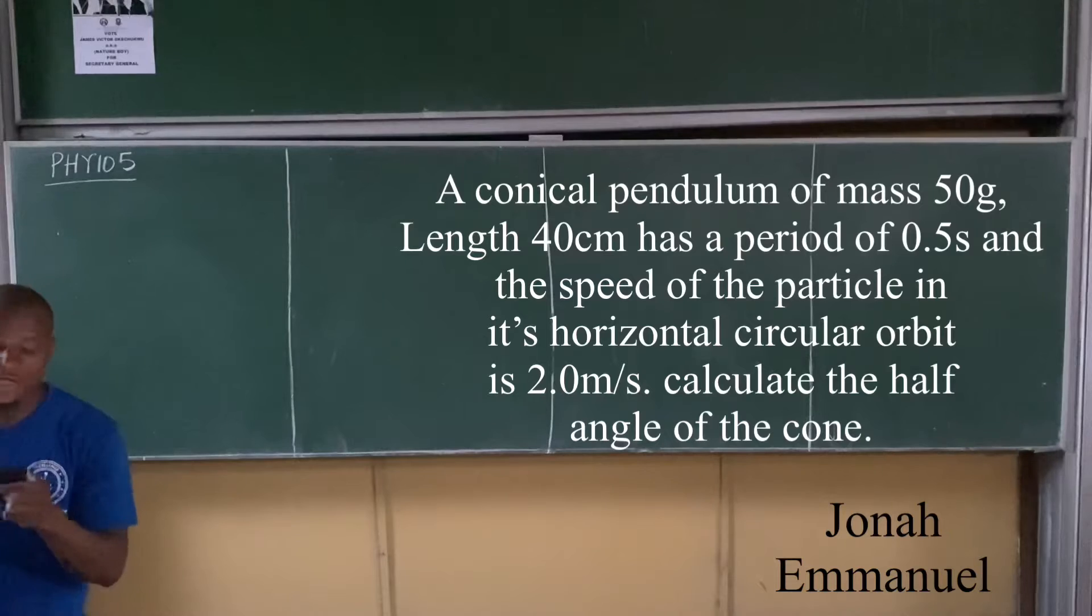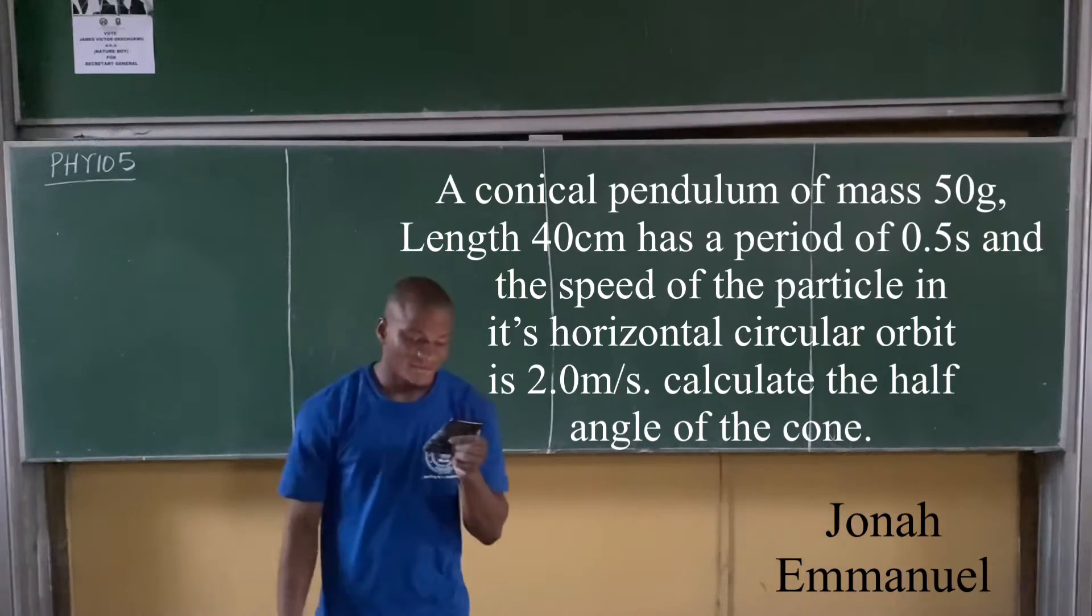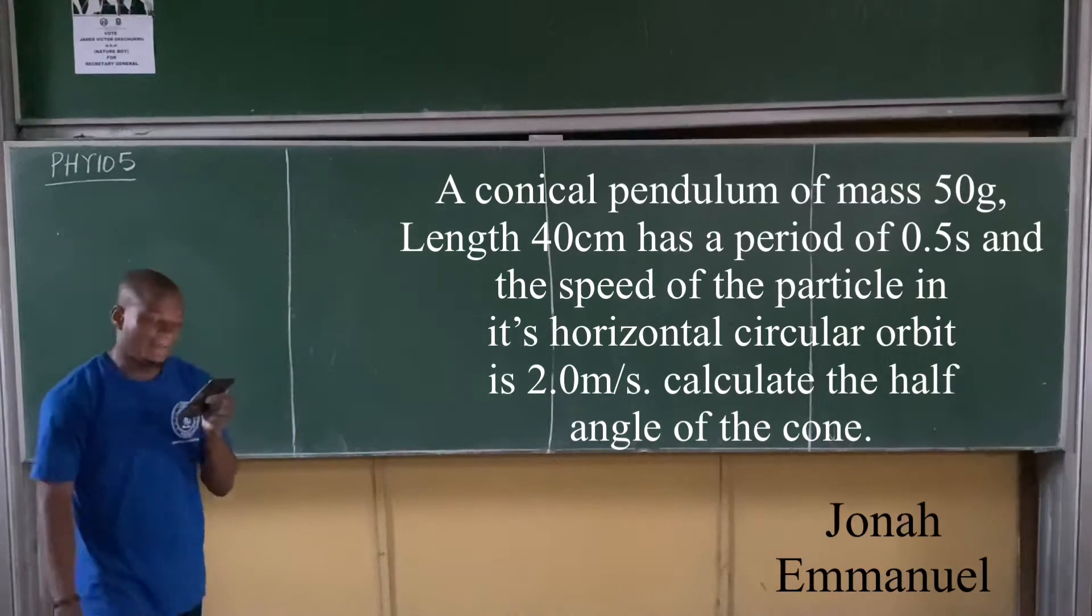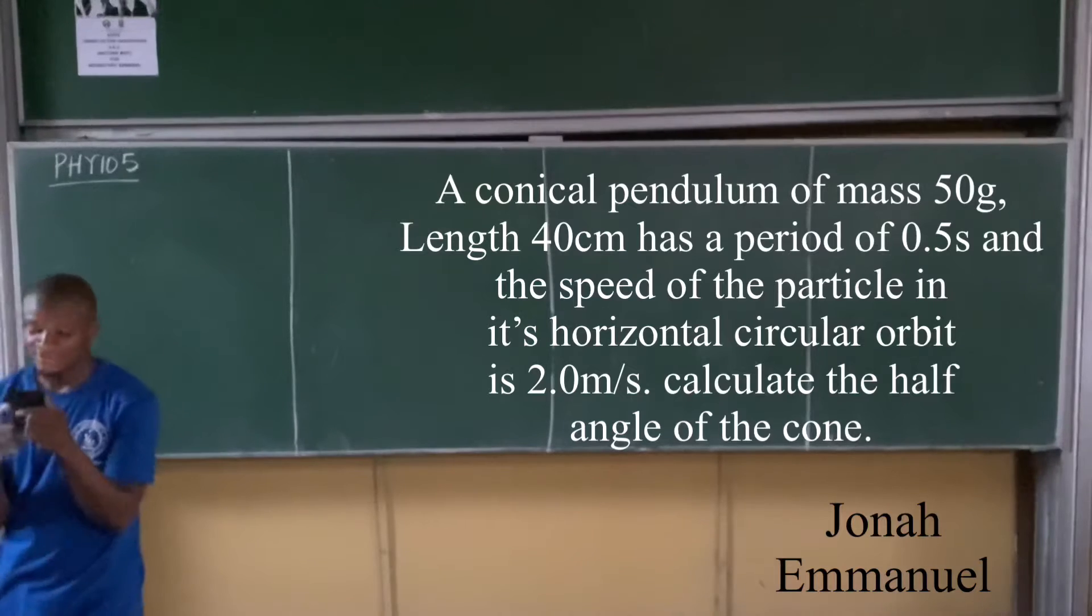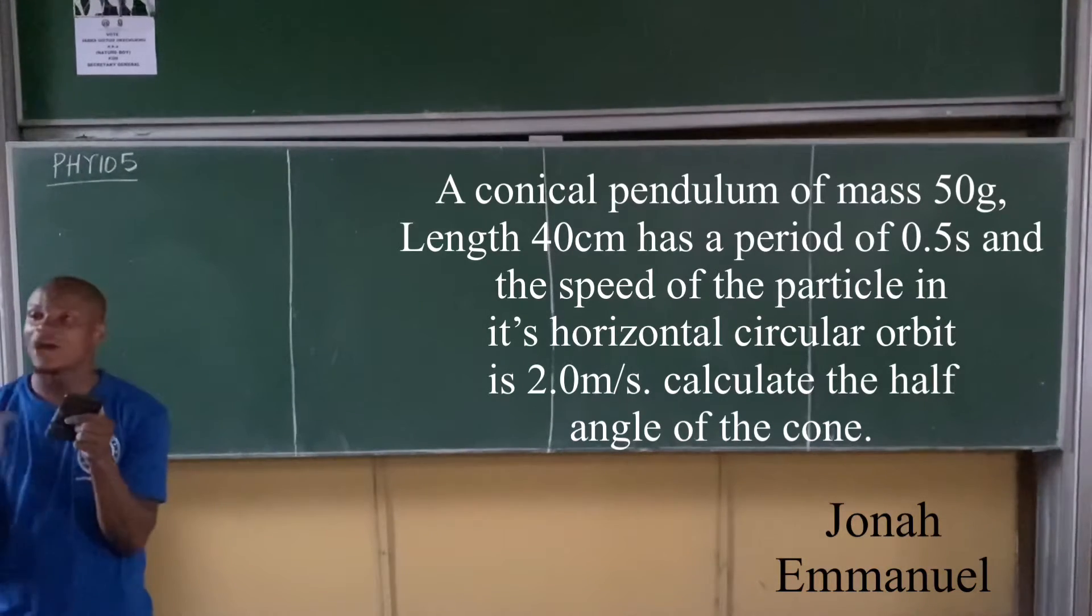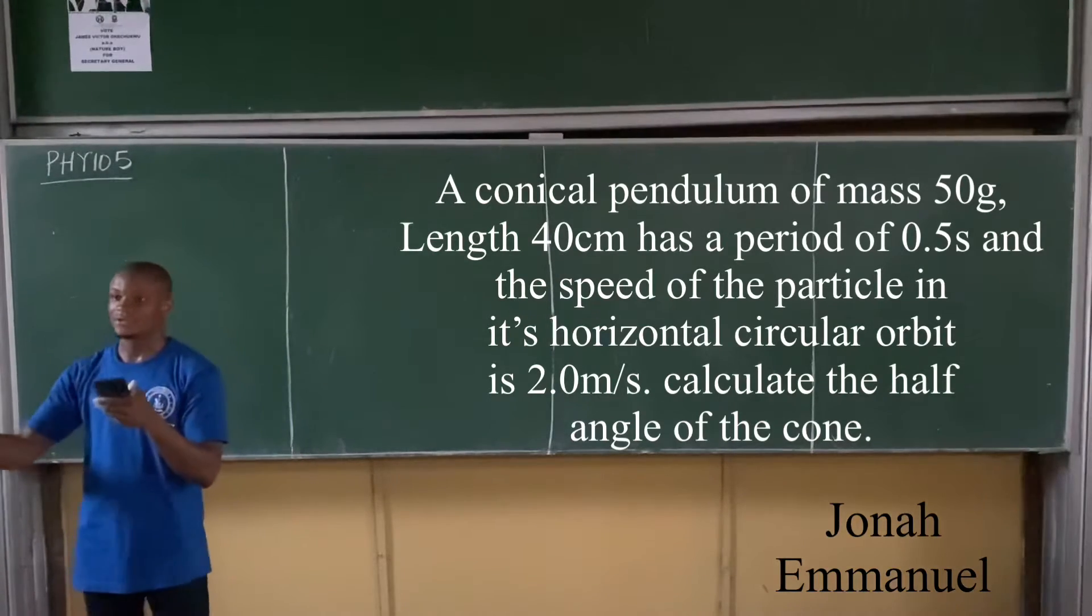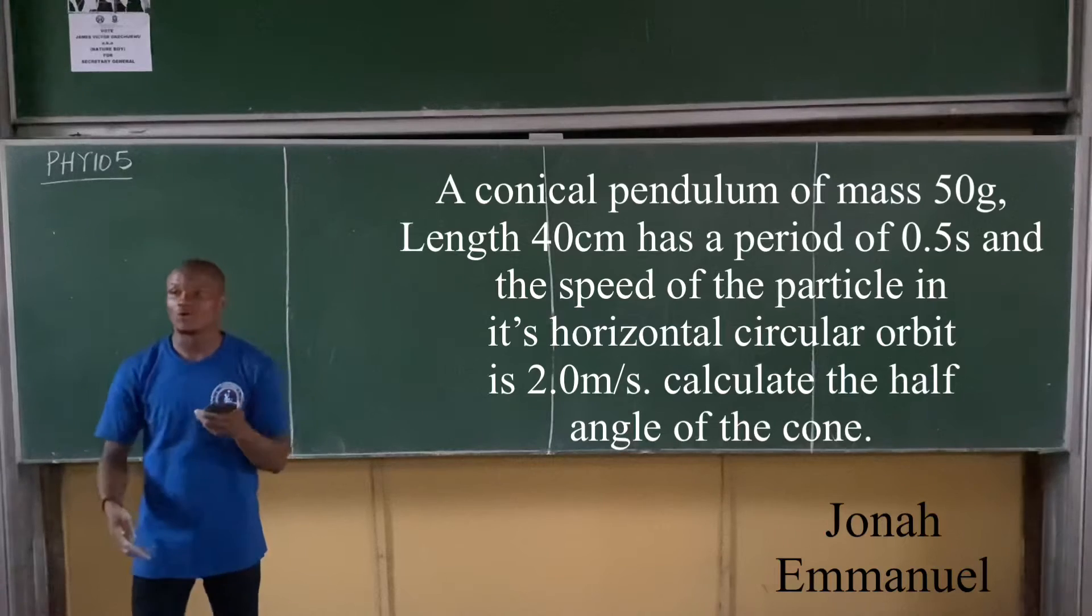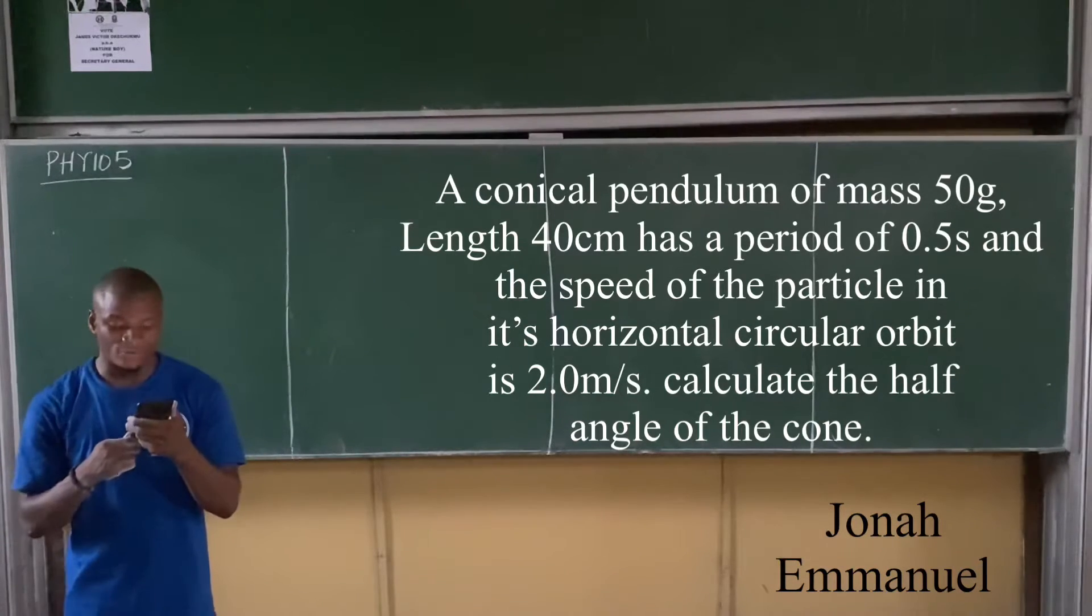A conical pendulum of mass 50 gram and length 40 cm has a period of 0.5 seconds. And the speed of the particle in its horizontal circular orbit is 2.0 meter per second. Calculate the half angle of the cone.